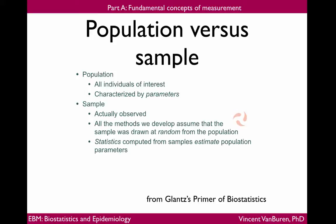Population versus sample. The population is the set of all individuals of interest, characterized by parameters, and those parameters are the mean and standard deviation. The sample is the set of observations that are actually collected. All the methods we develop assume that the sample was drawn at random from the population.